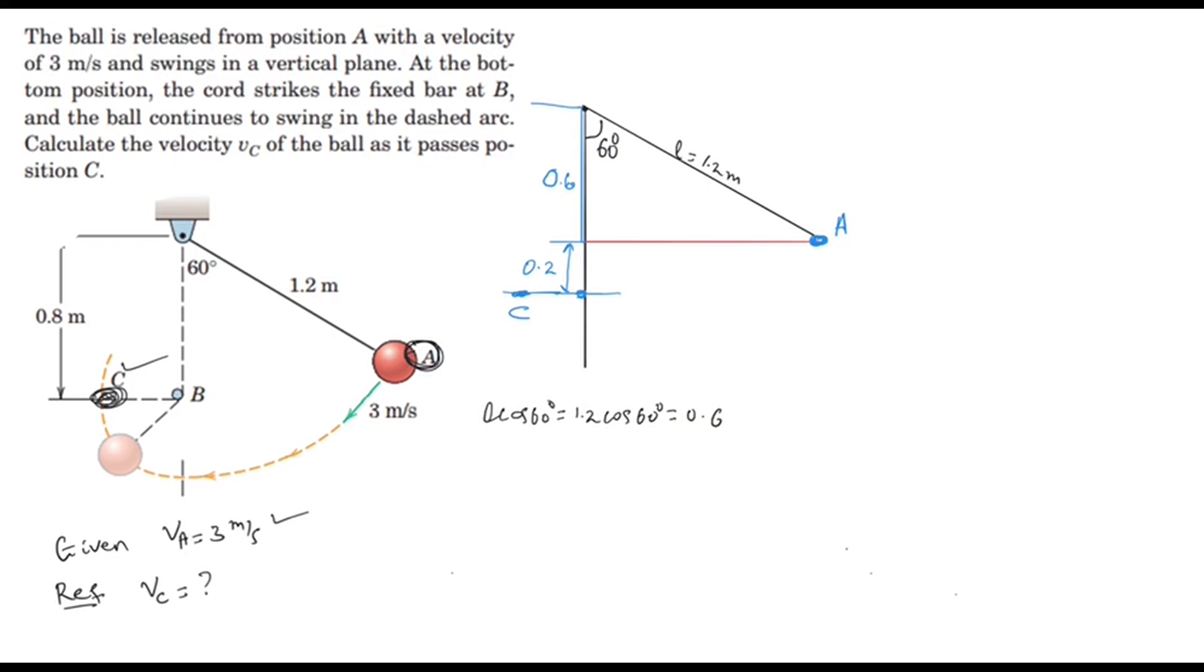At position A, the potential energy equals mass times gravity times h, so it will be mass times gravity times 0.2 in this case.